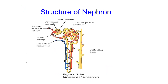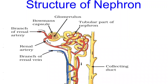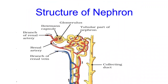The nephron contains the glomerulus, a tuft of capillary network where filtration of blood takes place at high pressure — known as glomerular filtration. There is a cup-shaped structure known as Bowman's capsule where the filtrate is collected. The tubular part of the nephron consists of the proximal convoluted tubule (PCT), a hairpin-like loop of Henle, a distal convoluted tubule, and the collecting duct. Various processes take place in these parts: filtration, reabsorption and secretion.